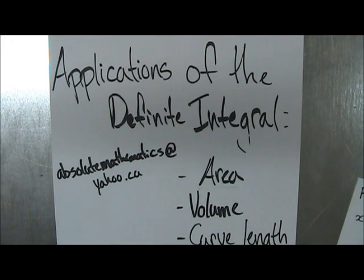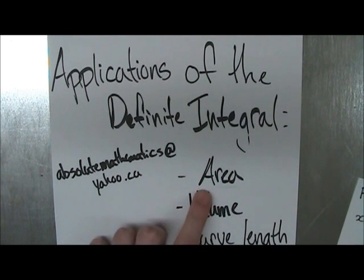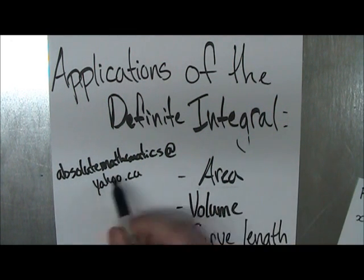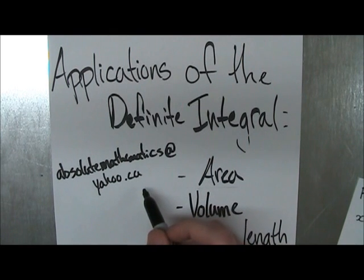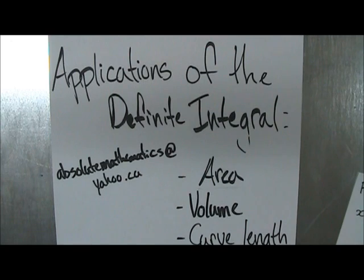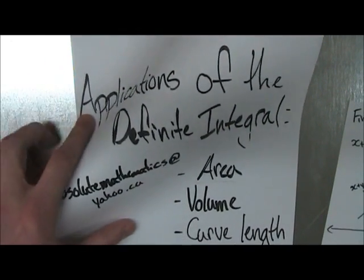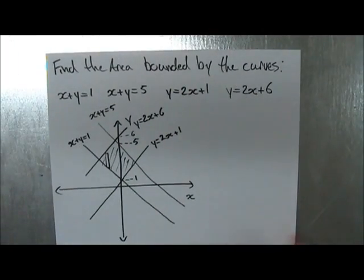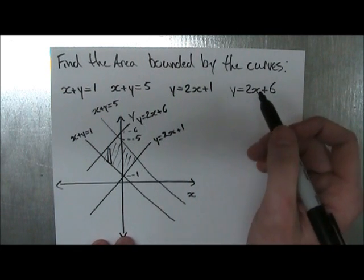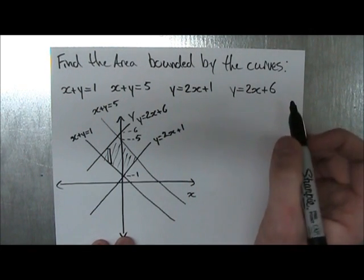Welcome back. We're going to be starting our fifth example on calculating the area between functions using definite integrals. If you have any questions, feel free to email me at absolutemathemax.yahoo.ca — if you have questions about problems your prof gave you that you can't figure out, maybe I'll even make a YouTube video out of them. So let's start with our final example. Definitely our most challenging example, so just to warn you, this will be a long video.